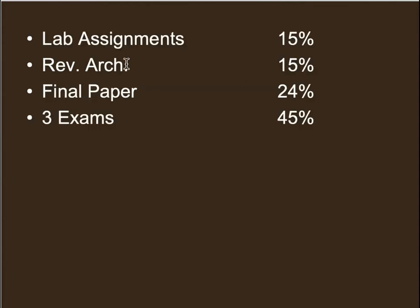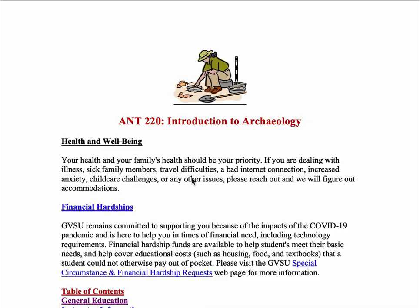In terms of how you'll be graded, you'll have the Revealing Archaeology interactive problems — that's 15% of your grade. Labs that you do on your own and in class will be another 15%. The final paper will entail collecting data, analyzing the data, and presenting it in a paper — that will be 24%. Then we will have three exams throughout the semester; they will not be cumulative. The last exam is the final, covering the last third of the class — essentially five weeks per exam for a total of 15 weeks. The exams together total 45%.